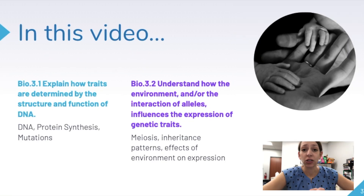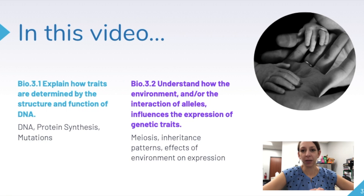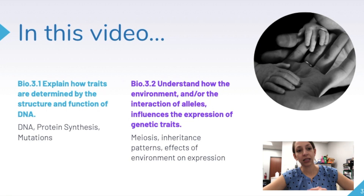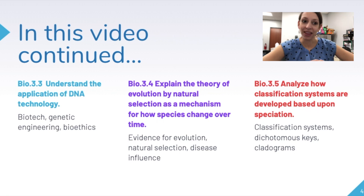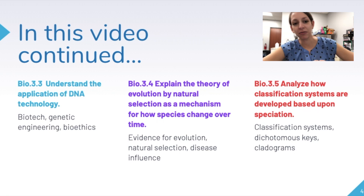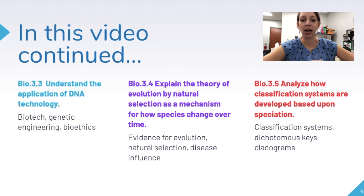This third video is going to focus on evolution and genetics, which is a huge part — almost half — of the biology EOC in North Carolina. We're going to cover essential standards 3.1 through 3.5 and their objectives, which include topics like DNA, protein synthesis, mutations, meiosis, inheritance patterns, effects of environment on gene expression, biotechnology, genetic engineering, bioethics, evidence for evolution, natural selection, disease influence, classification systems, dichotomous keys, and cladograms. Keep in mind this video is meant as a review, so we won't have time to touch on everything, just the simplified essentials.